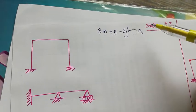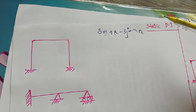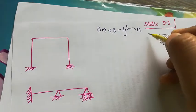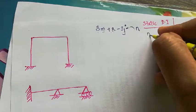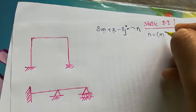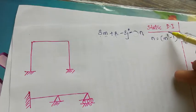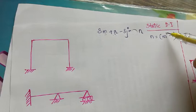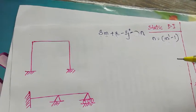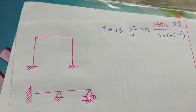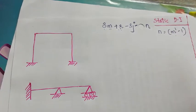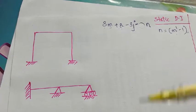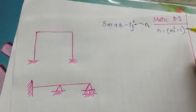n stands for number of internal hinges, or the number of members joining at an internal hinge. For that, there is a separate equation: n = m' - 1, where m' stands for number of members joining at an internal hinge. These internal hinges are normally provided in hybrid structures, which we will cover later.